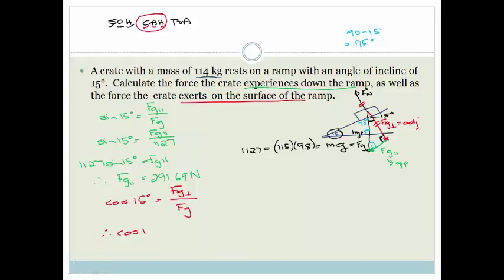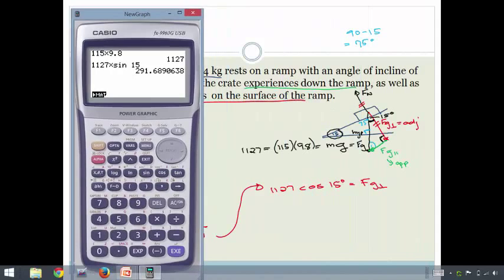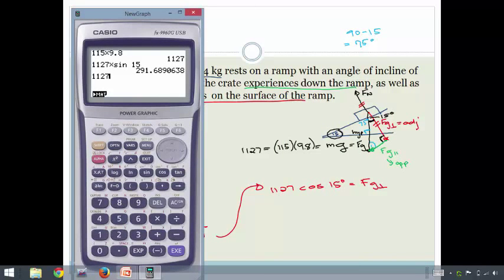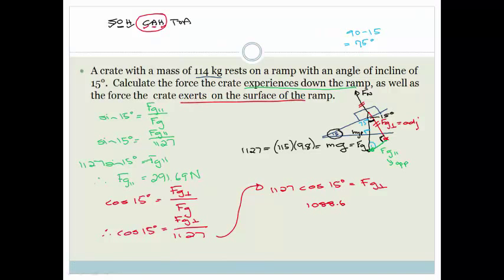Therefore, cos of 15 degrees is equal to Fg perpendicular over 1127. I'm taking this 1127 over to the other side, so I get 1127 cos of 15 degrees is equal to Fg perpendicular. And now we get out the calculator and we go 1127 cos of 15, and we get 1088.598. The 8 rounds the 9 up which rounds this up to 6, so it's actually 1088.6 Newtons. 1088.6 Newtons equals the perpendicular component of the crate.